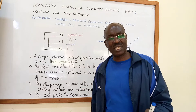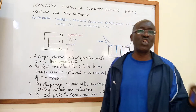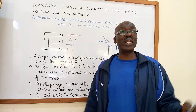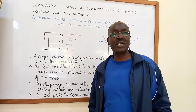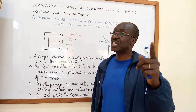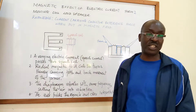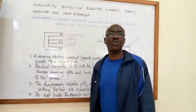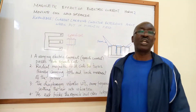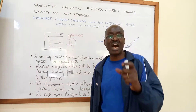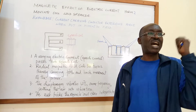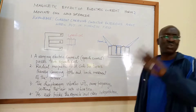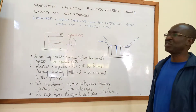Magnetic field — all magnets have got north and south poles. So when I talk of magnetic field, the first thing you expect to see is a magnet. Then for you to know the direction, you must have polarity — you must have north and south. So that is what we are going to look at.